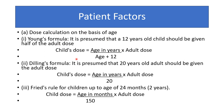Formulas for pediatric dose calculation: Young's formula — child dose = (age in years / (age + 12)) × adult dose. Dilling's formula — child dose = (age in years / 20) × adult dose. Fried's rule for children up to 24 months — child dose = (age in months / 150) × adult dose.